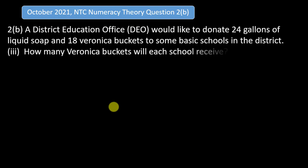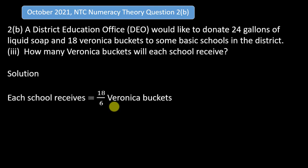For the third part — how many Veronica packets will each school receive? We divide the number of Veronica packets by the number of schools, which is 6. Each school receives 18 ÷ 6 = 3 Veronica packets. This is how you are supposed to solve this particular question. Thank you for your time and may God bless you.